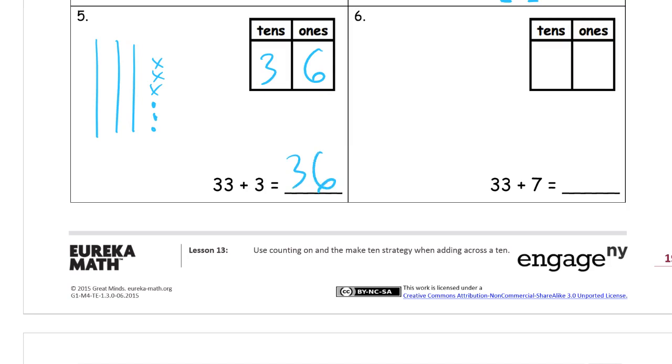Now 33 plus 7. We're going to draw the 33 first: 10, 20, 30, 31, 32, 33. And now the seven. You might see this 3 plus 7, so you might know what's coming here.